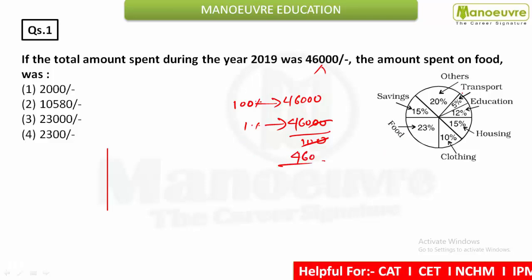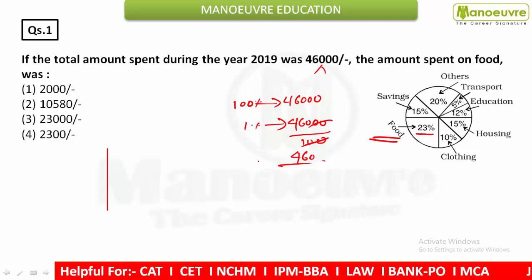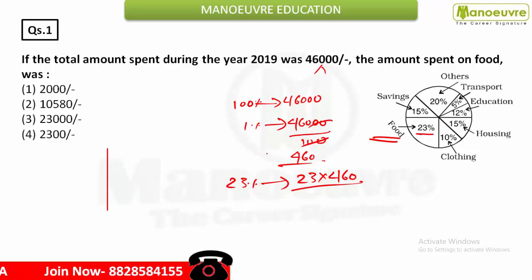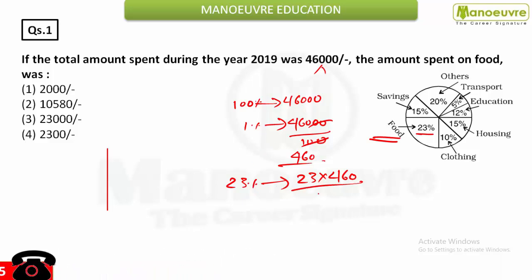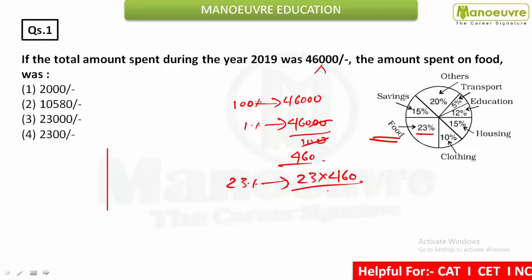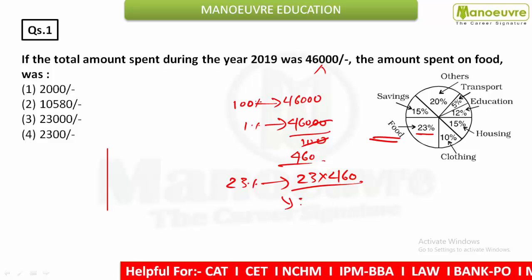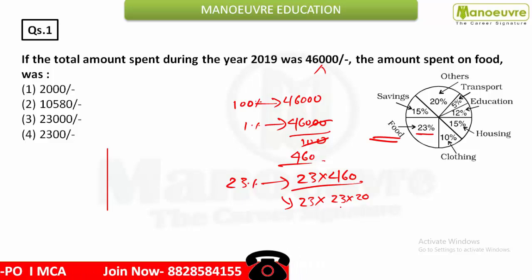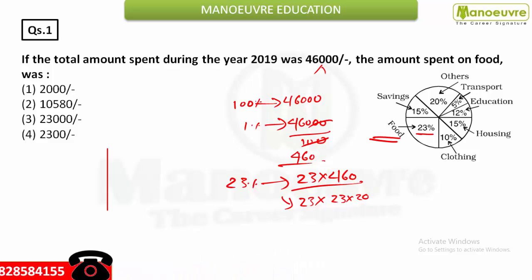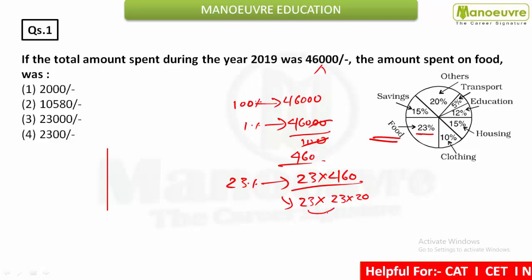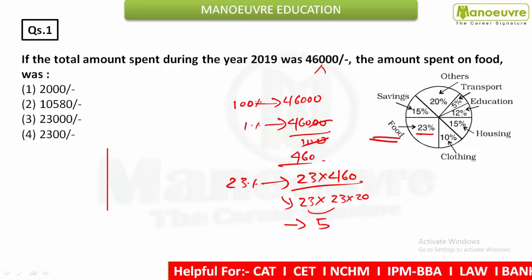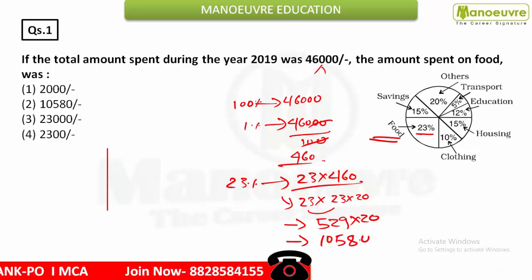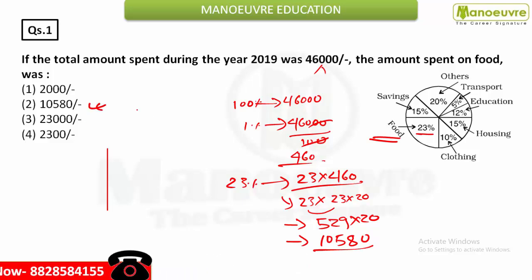Now you have to find the amount spent on food, which is 23%. So you multiply 23 by 460, since we already found the value of 1%. We can write 23 × 460 as 23 × 23 × 20. The square of 23 is 529, and 529 × 20 equals 10,580. So 10,580 is your answer.